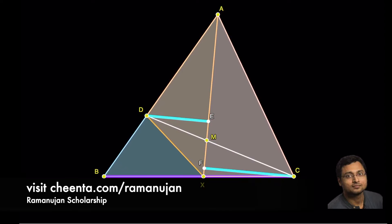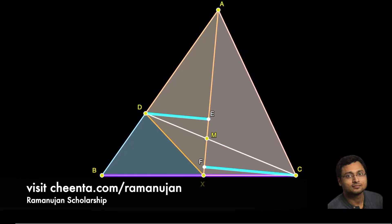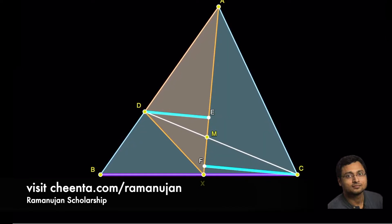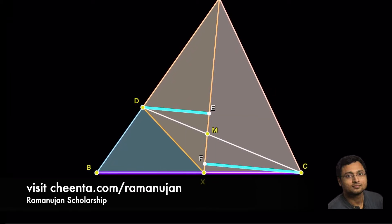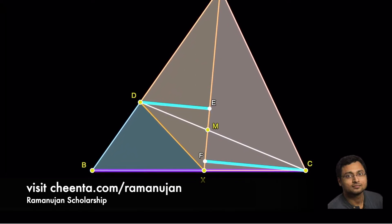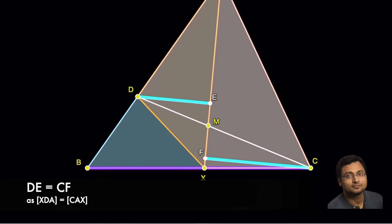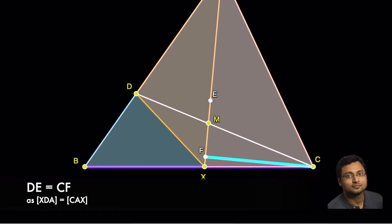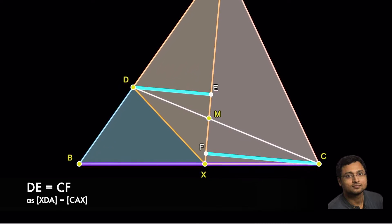This is true because the area of the triangle XAC and the triangle XAD are equal. Can you give me a rigorous argument why DE is equal to CF from the fact that the two triangles have equal area?